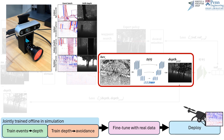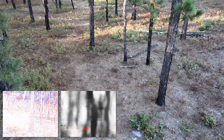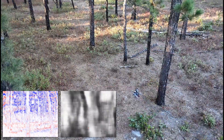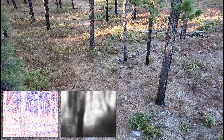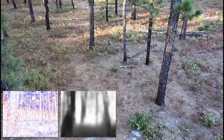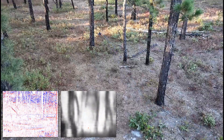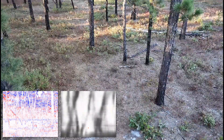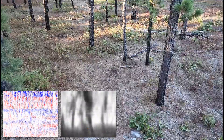After this, we can deploy on our robot to avoid real-world obstacles. For the first time, we successfully transfer an events-to-control policy from simulation to real-world continuous robot control for obstacle avoidance.